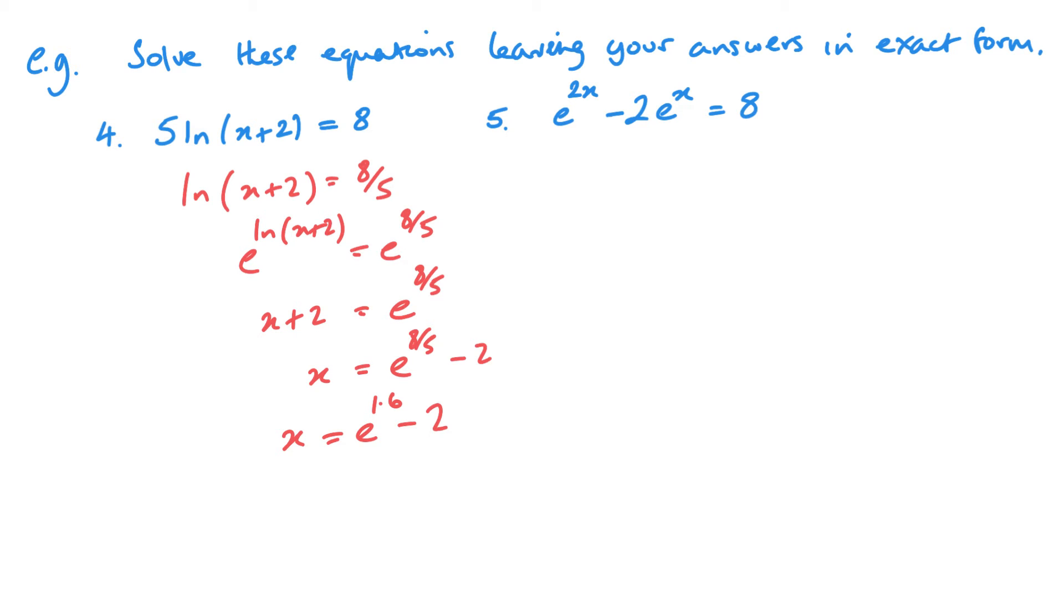Now, example 5 is about noticing that this is actually a quadratic equation. So e to the power 2x, this is actually the same as e to the power x squared because of my rules of indices. So this actually means that I have a squared term, a single term, and then that constant. So I am looking at a quadratic.